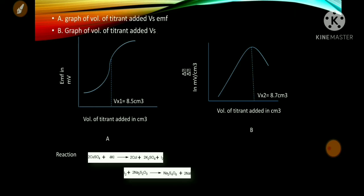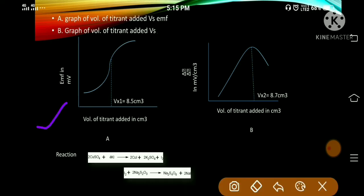Plot graph A: volume of titrant added versus EMF. A sigmoid curve is obtained and the equivalence point Vx1 is measured as 8.5 cm³. In the second plot, graph of volume of titrant added versus delta E / delta V (in millivolt per cm³), a bell-shaped plot is obtained. The equivalence point from this plot, Vx2, is observed at 8.7 cm³.